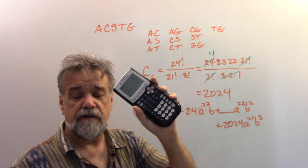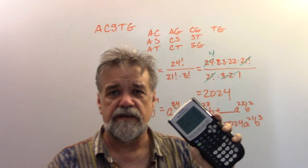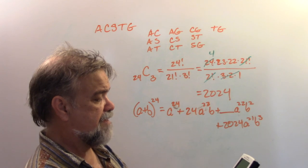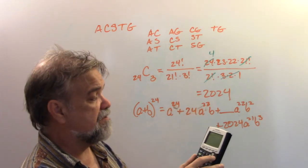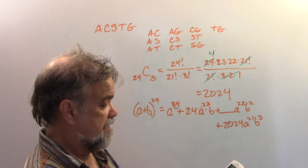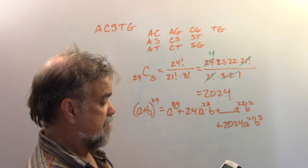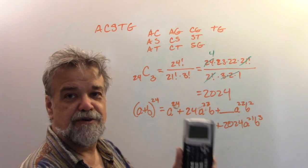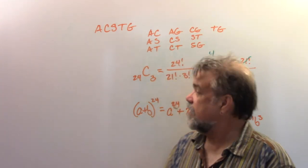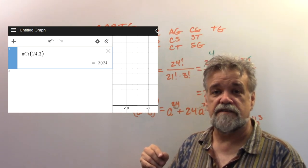By the way, since I have my TI-84 Plus here — many calculators can find this coefficient directly. Hit the MATH button, arrow over to PRB for probability, and select option 3: nCr. Type 24, then nCr, then 3, and it returns 2024 — exactly what we got. You can also do this in Desmos the same way.